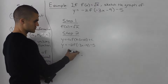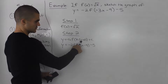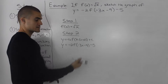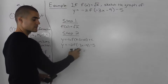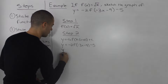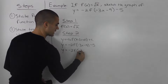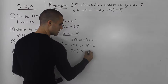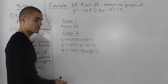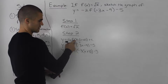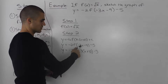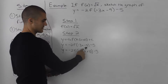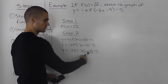These forms are fairly similar but there is one difference. In the general transformation, the x is by itself with the k value factored out. Here, there's a value attached to the x — the negative 3. So to match the general form, you always have to make sure that x is by itself. We factor out negative 3: y equals negative 2 f of negative 3 times (x plus 3), minus 5. Negative 9 divided by negative 3 gives us positive 3, so we're left with x plus 3.